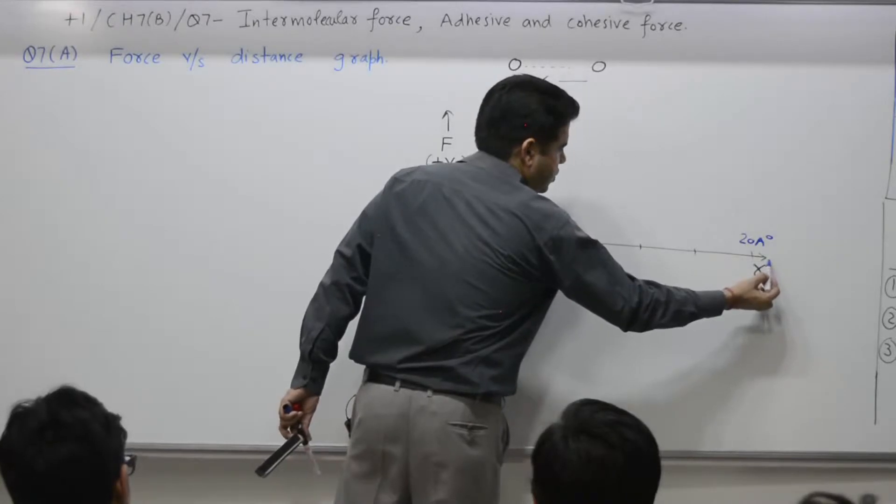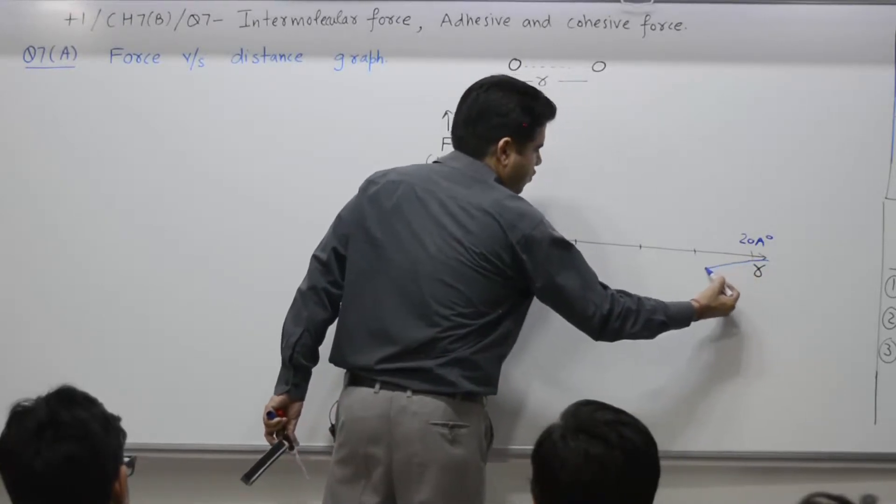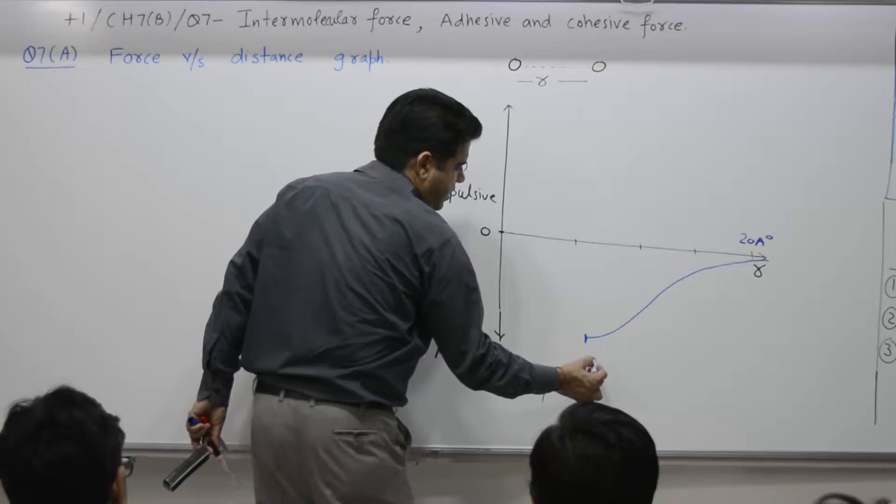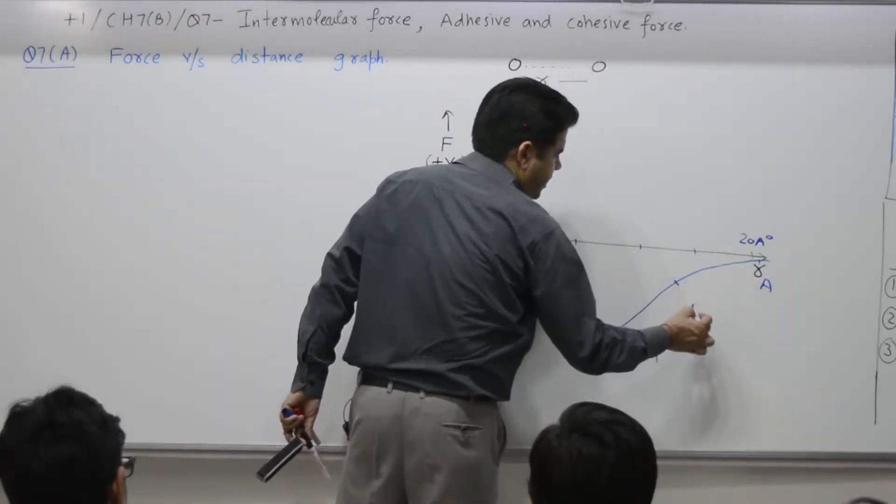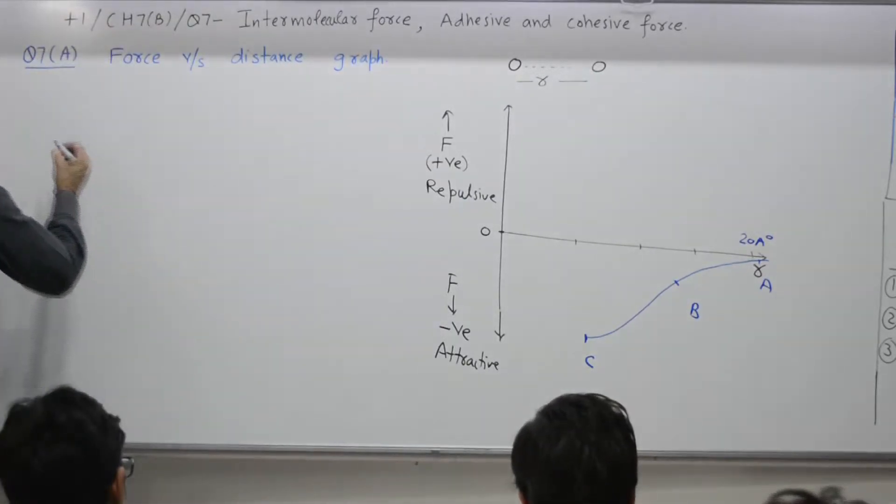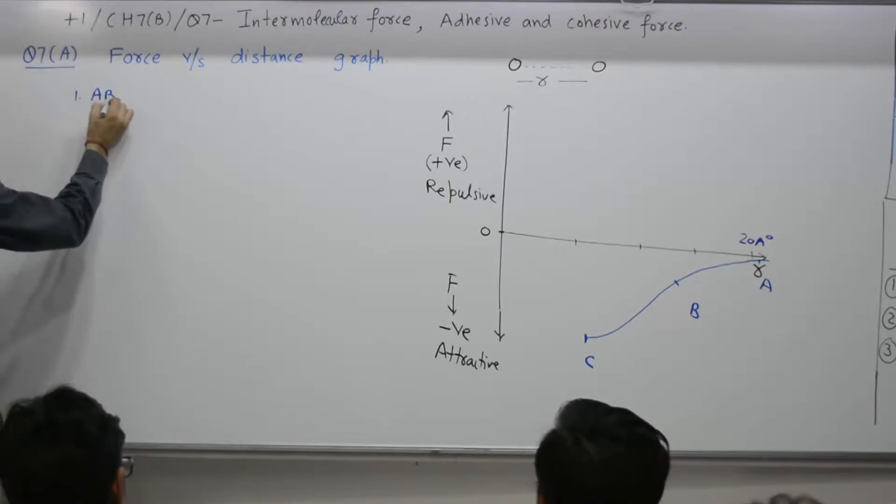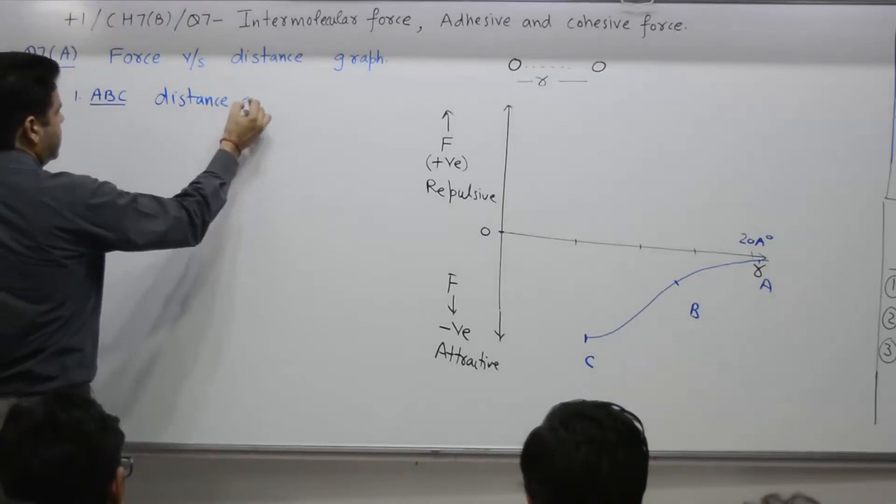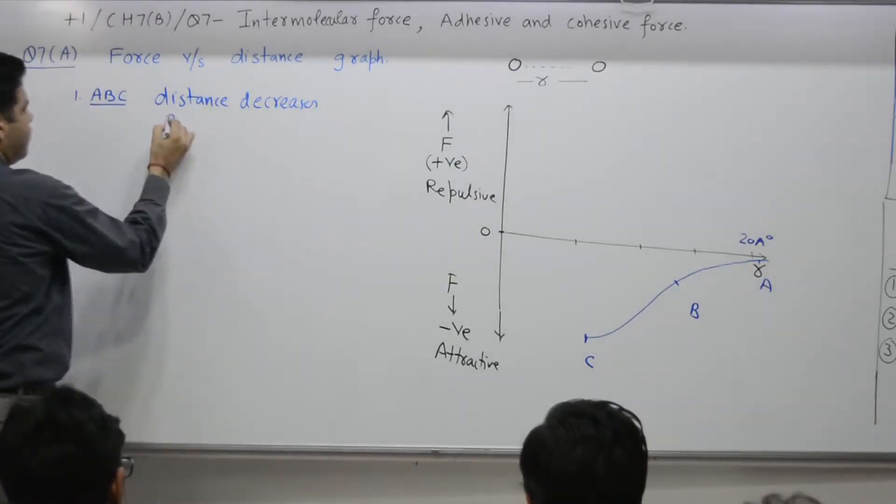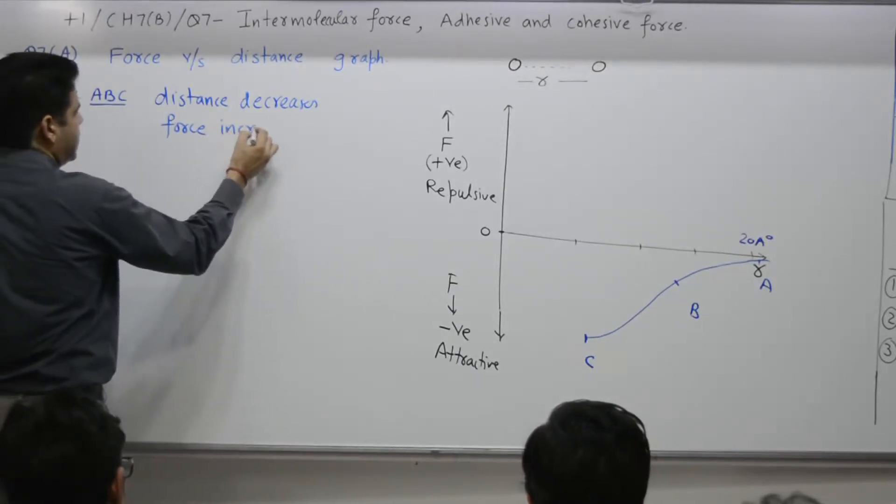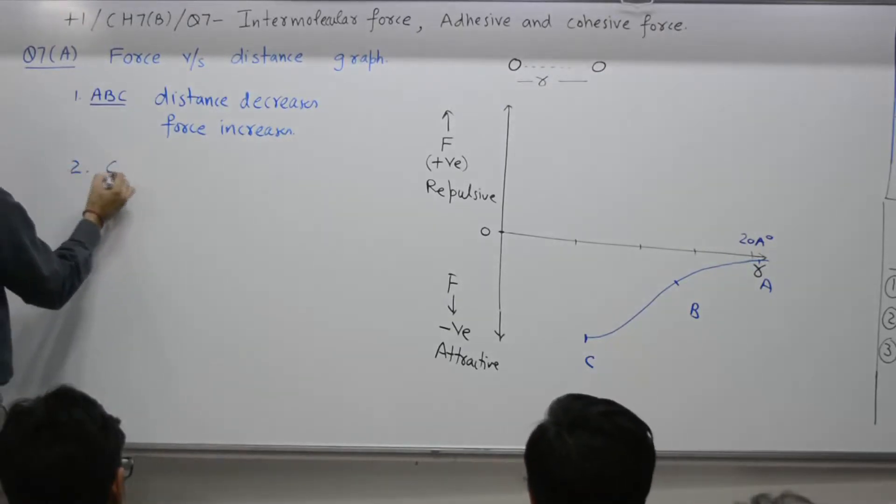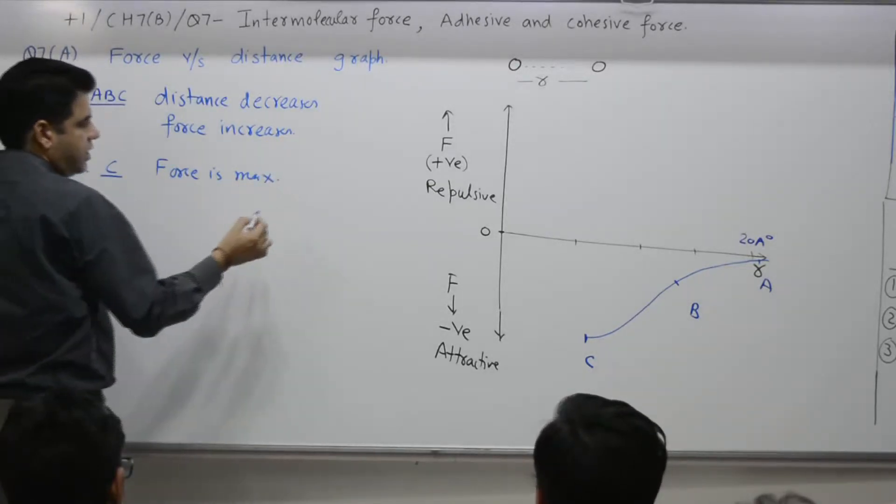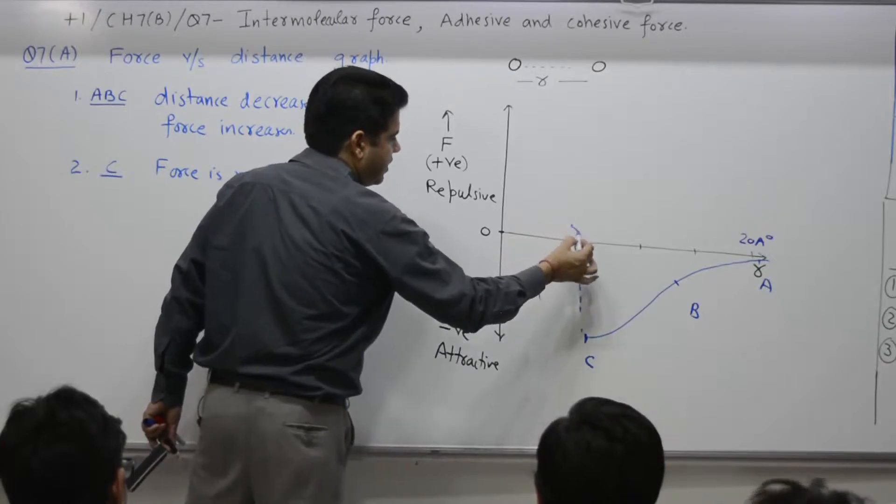As the distance between the two decreases, force increases and force becomes maximum at this point, termed as C. This path is A, B, C. For path A, B, C, distance decreases and force increases. At C, force is maximum and the value of distance is 5 angstroms.